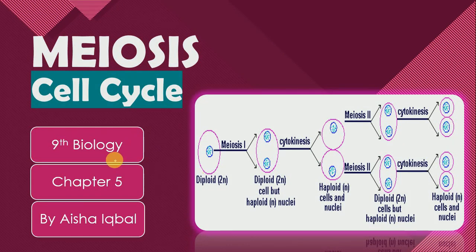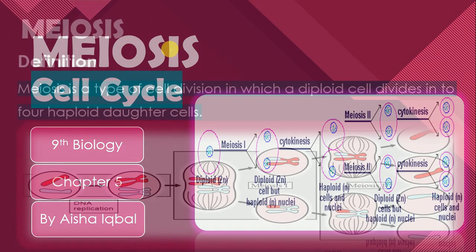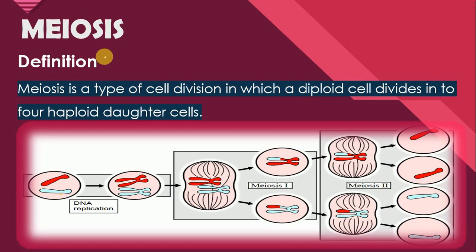Welcome to our channel viewers in the biology 9th class, chapter number 5. Today we are going to discuss the second type of cell division of the cell cycle, that is meiosis. Meiosis cell division ki wo type hai jo ke sex cells mein hoti hai, aur animals mein gametes production ke liye important hai aur plants mein spores banane ke kaam aati hai.